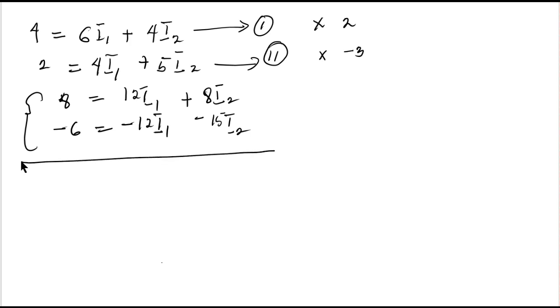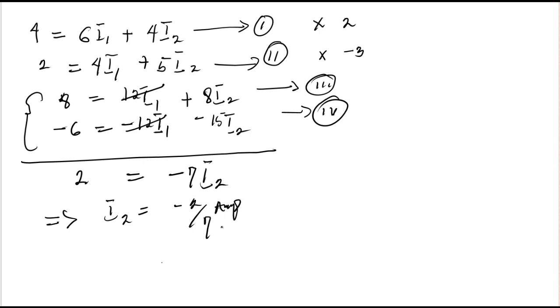I can easily add up both equations. Let's call these equation 3 and equation 4. 12I1 minus 12I1 will cancel out, while 8 minus 6 becomes 2. This equals 8I2 minus 15I2, which becomes minus 7I2. So my I2 is minus 2 over 7. We measure current in amperes, so this is minus 2 over 7 amps.